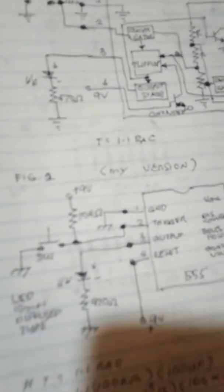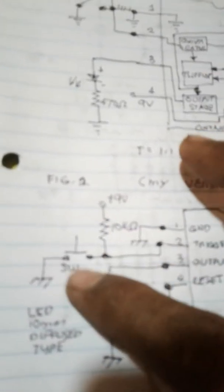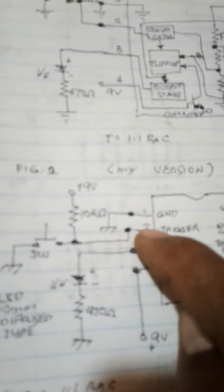Let's see. There's 10k here, 10k connected to 9 volts with my push button connected to pin 2. Pin 3 is my LED - it's green, not red - with 470 ohms.